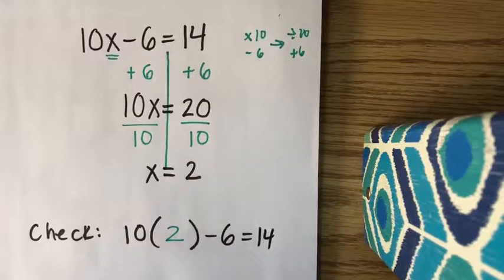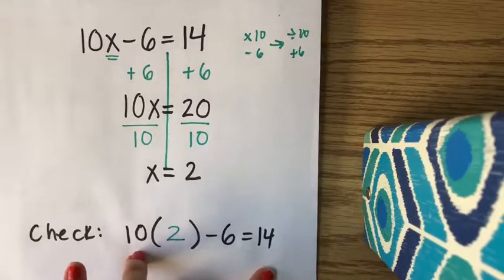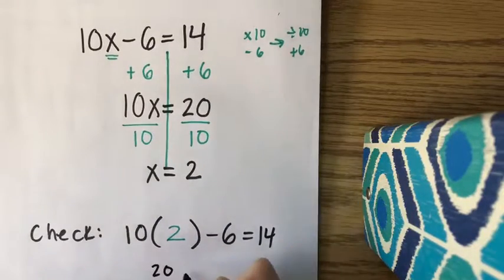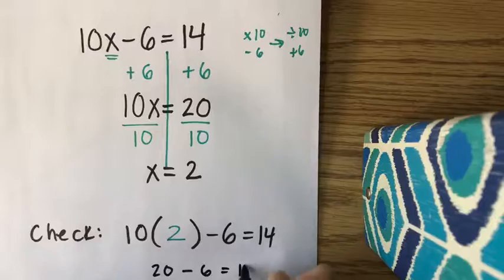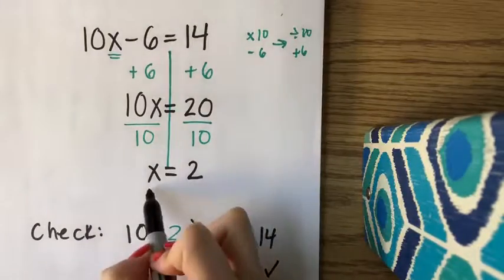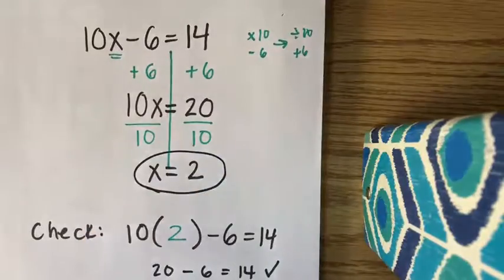If I simplify this expression, and this side equals 14, then I know I did it right. So 10 times 2 is 20. Minus 6, that's 14. So I know that I did it right, and the solution to my equation is x equals 2.